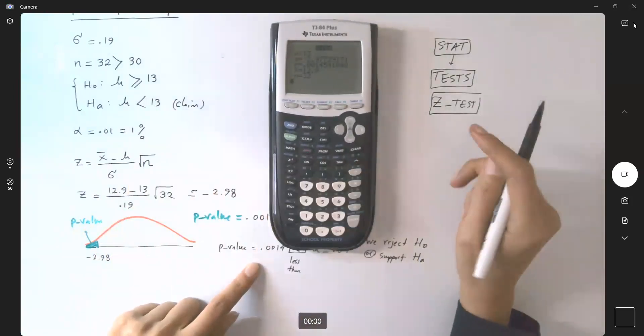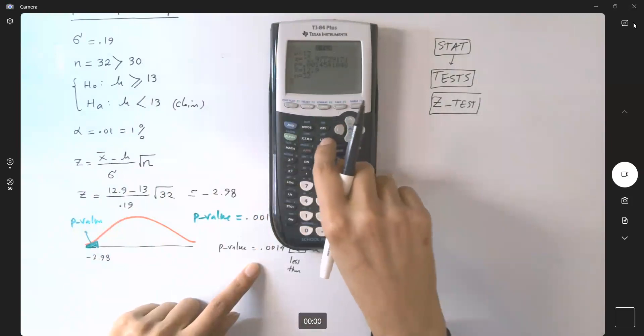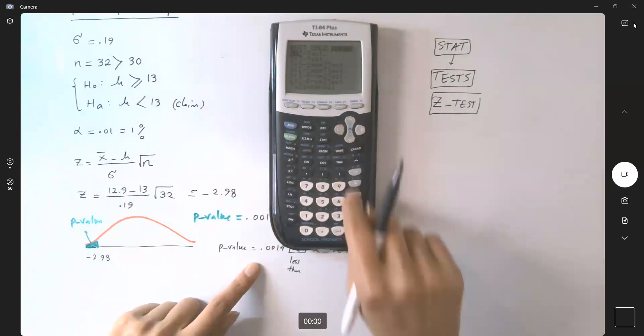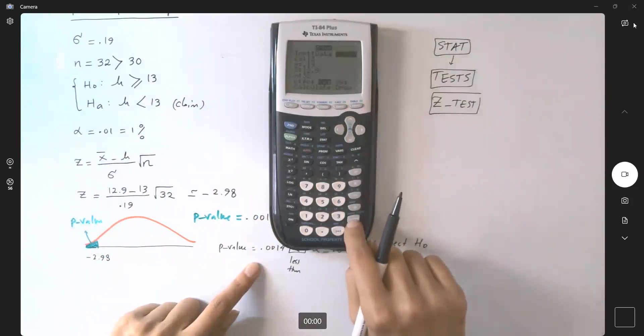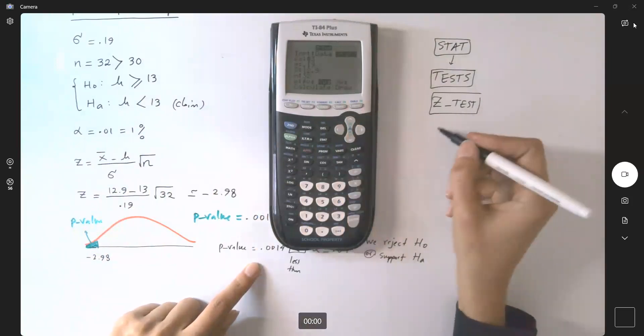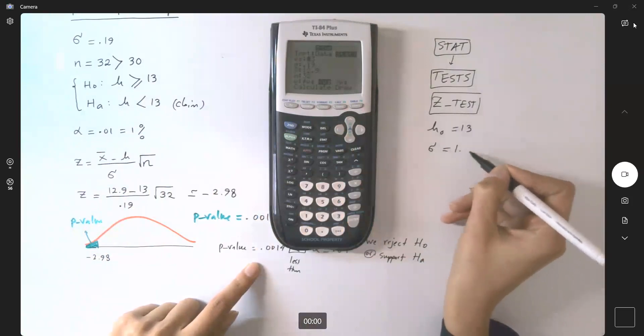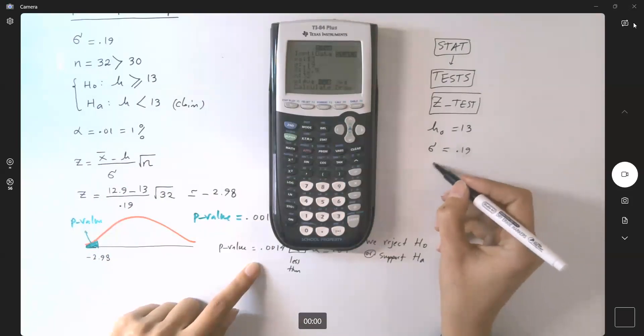So again, go back to z-test, stat, tests, z-test. And since you have statistics, your summary stats, mu 0 is 13, sigma is given 0.19.